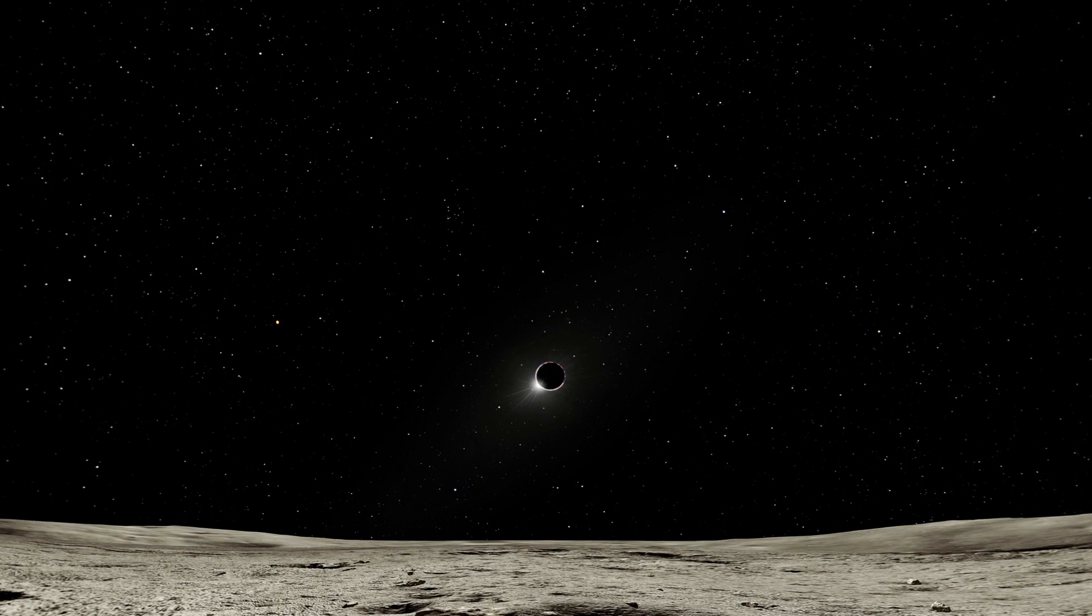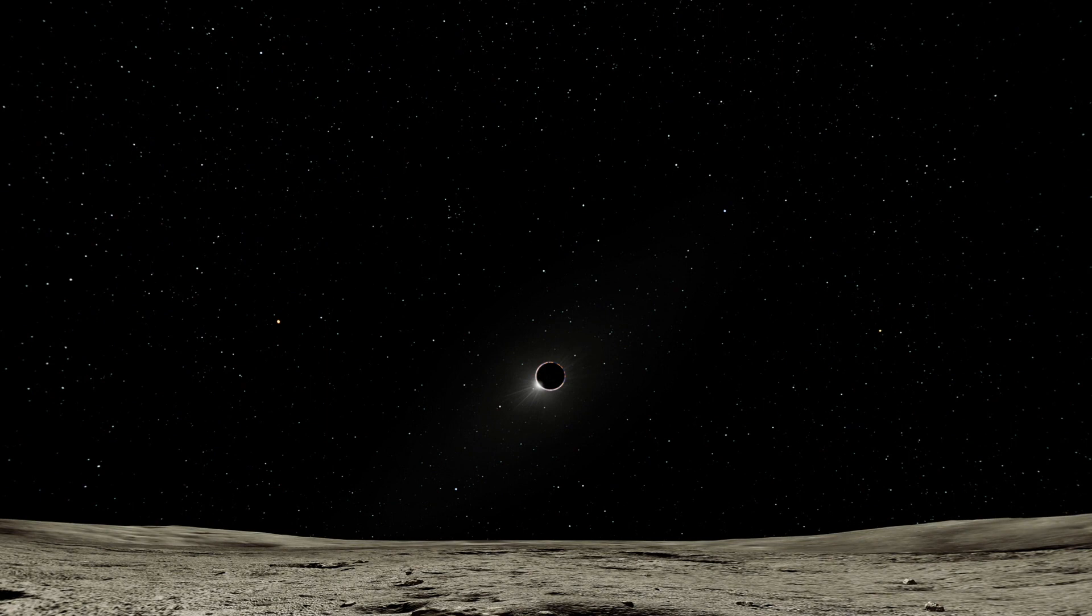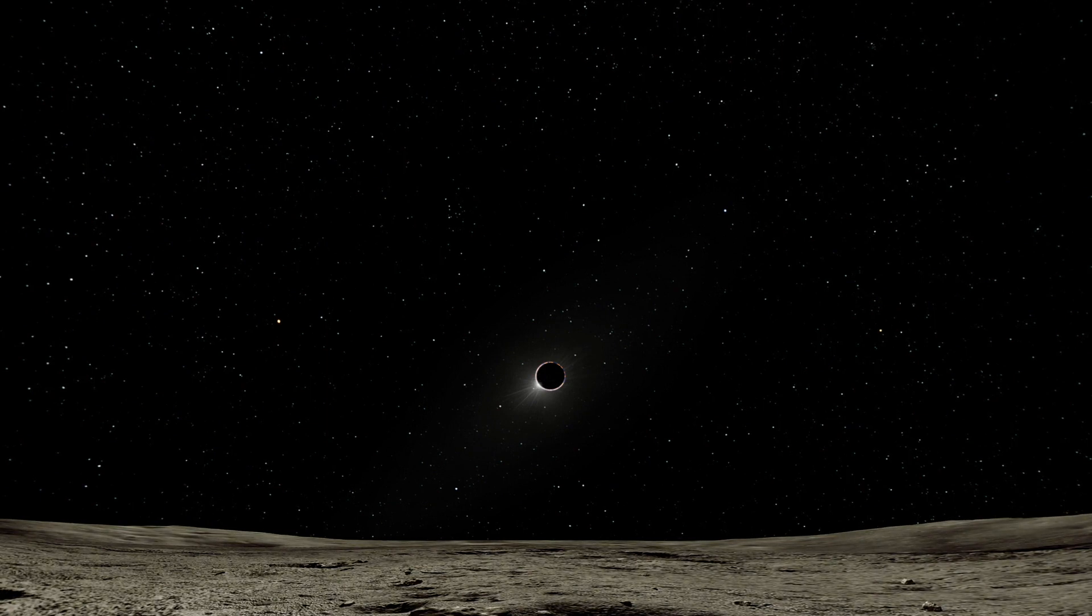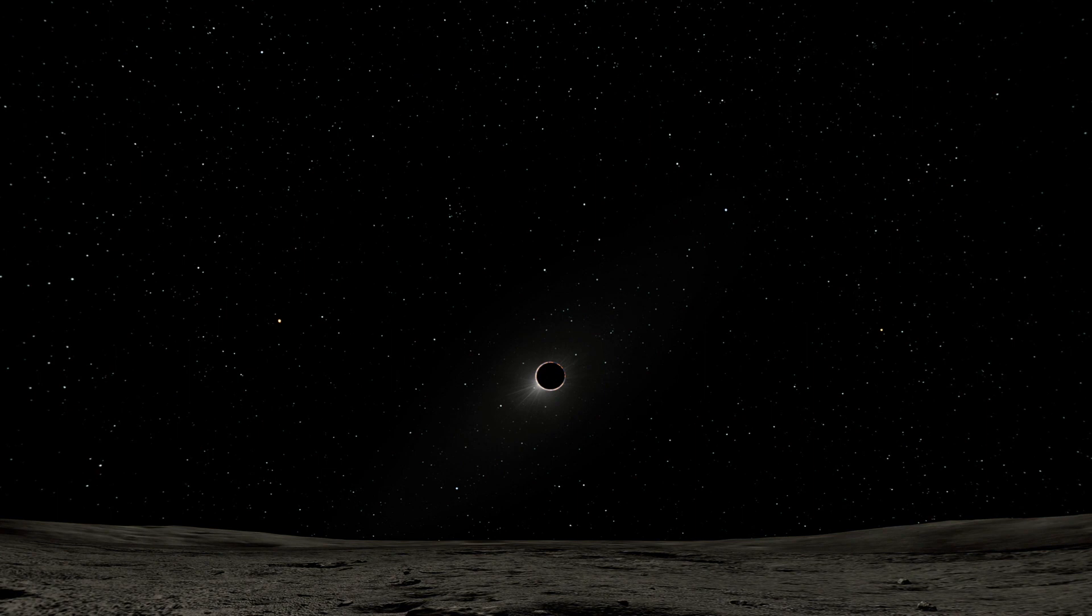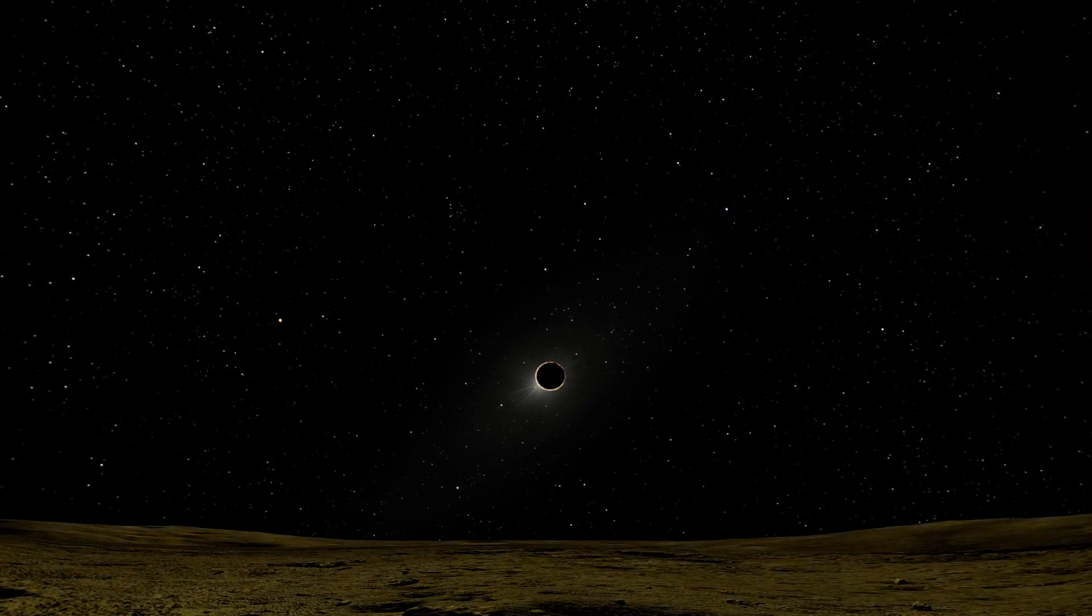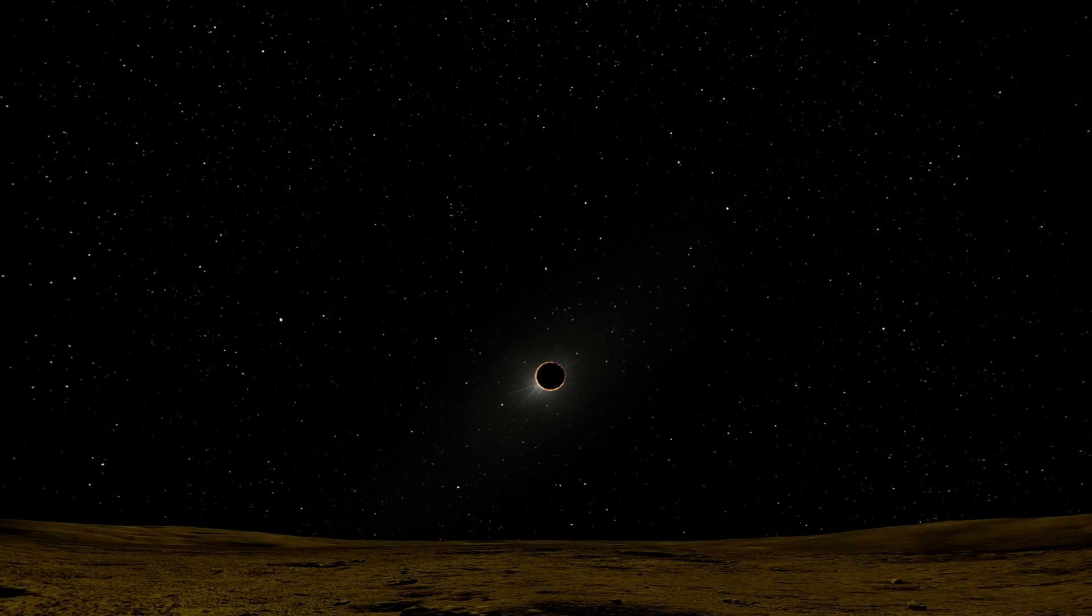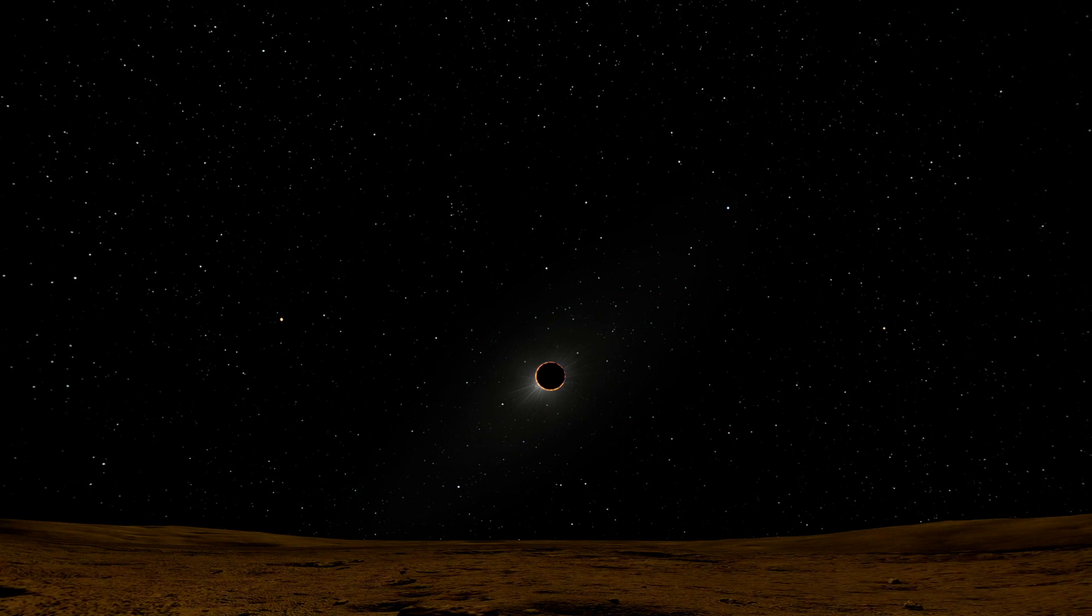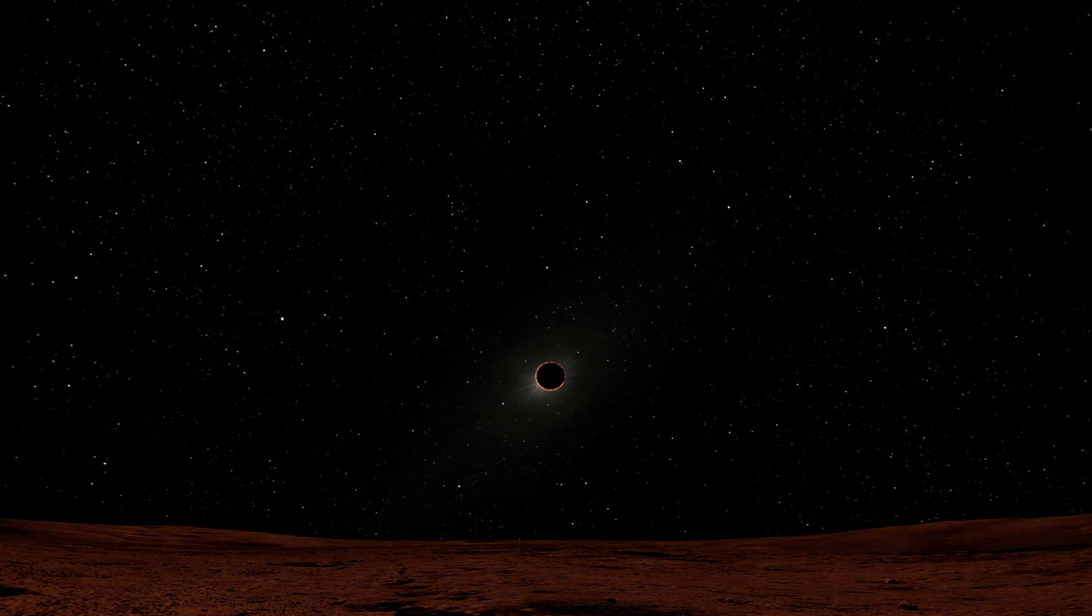But what would astronauts on the moon see during a lunar eclipse on Earth? In the sky, the Earth would slowly cover the sun for as long as an hour. As totality approached, the moon's surface would grow darker in deepening hues of orange and red. The Earth eclipsing the sun would be uniquely beautiful from the lunar surface. Our moon is the second place where we might someday see a solar eclipse.